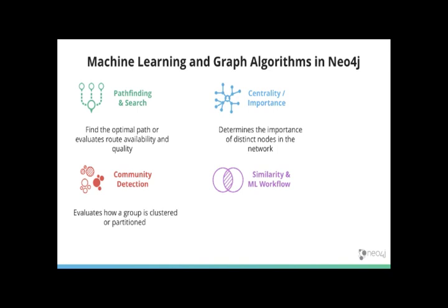Similarity and machine learning workflow are put together because they're often used together. Similarity in particular is about looking at how much alike individual or groups of nodes are. And then machine learning workflow are often the algorithms that help us transform graph data to be used for other machine learning tasks.